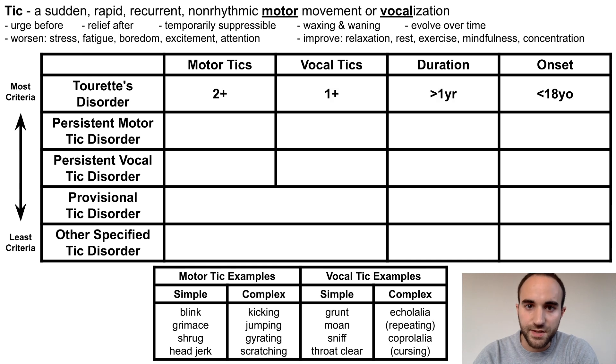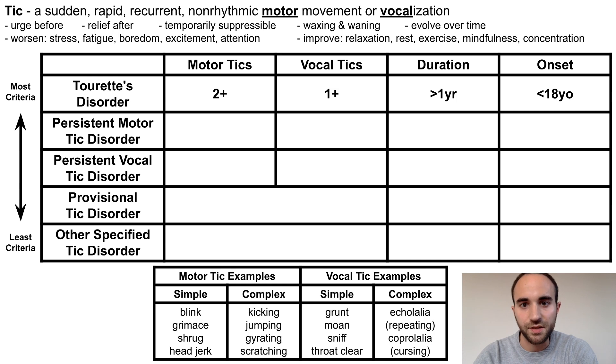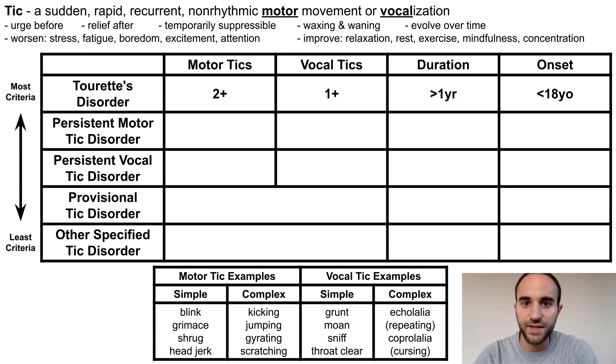Starting with Tourette's disorder, this involves having at least two motor ticks and at least one vocal tick. Duration must be at least one year, and onset must be less than 18 years old.